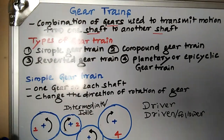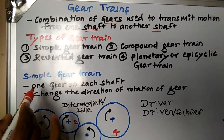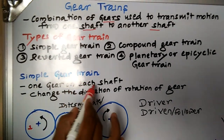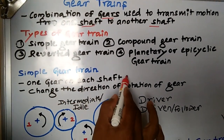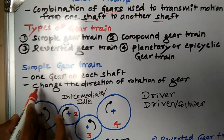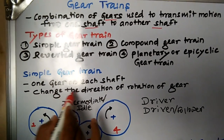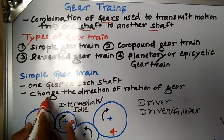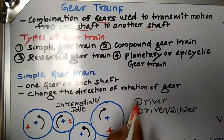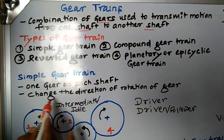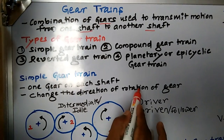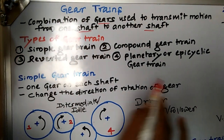In a simple gear train, there is one gear on each shaft. The purpose of this simple gear train is that we can change the direction of rotation of the gear.